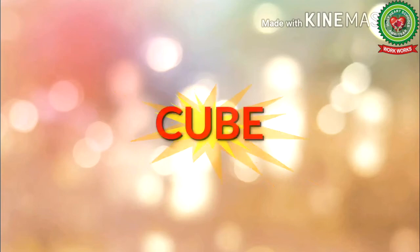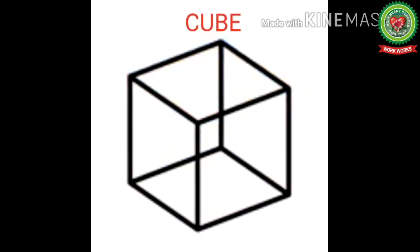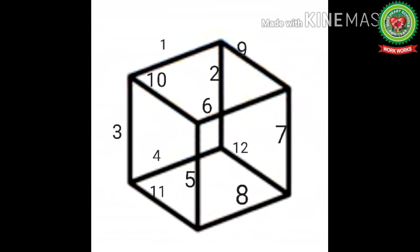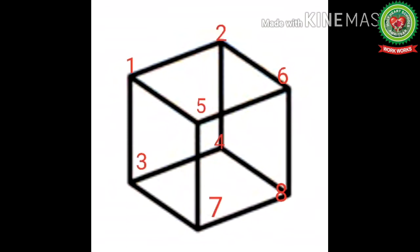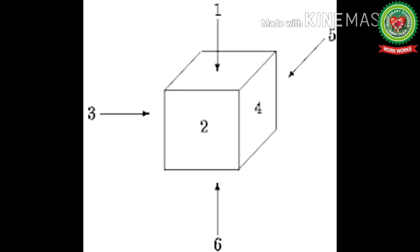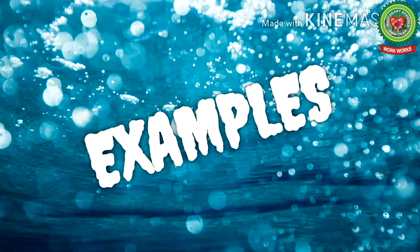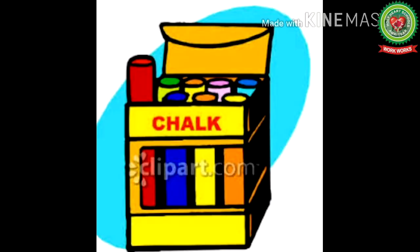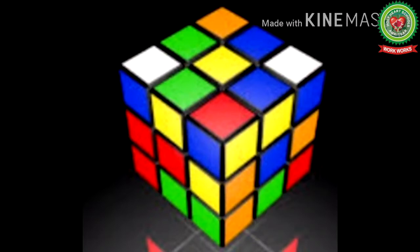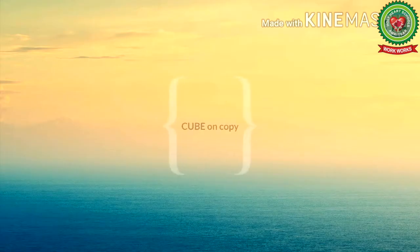Now let's learn about cube. Kids, this is a cube. It has 12 edges — edges are the sides of a solid shape. It has 8 vertices — vertices are the corners of a solid shape. And it has 6 faces — faces are the flat surface. Examples of cube are chalk box, ice cube, sugar cube, and Rubik's cube.